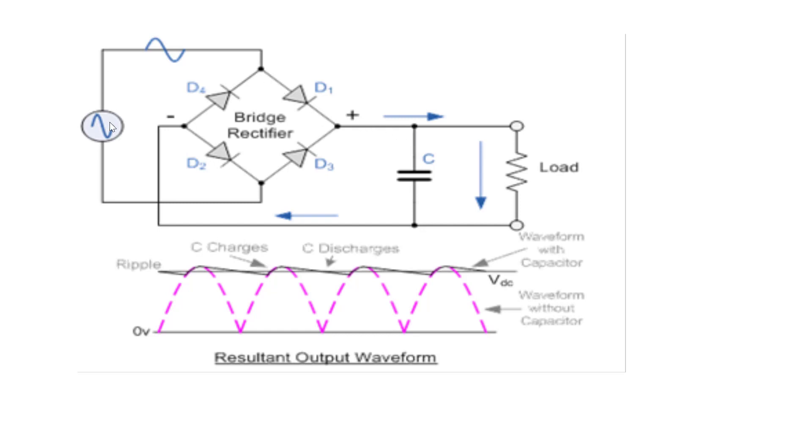Power isn't going to go backwards through diodes and go back into the grid. Once the voltage on the AC is less than the current voltage on the capacitor, just no current is going to flow. Not until the capacitor voltage is below the amplitude of the sine wave.